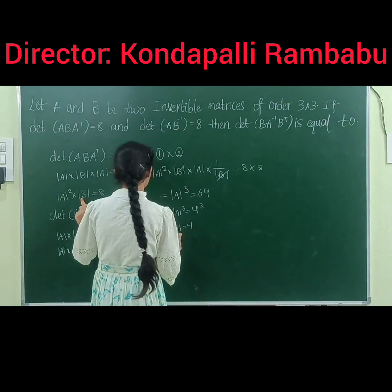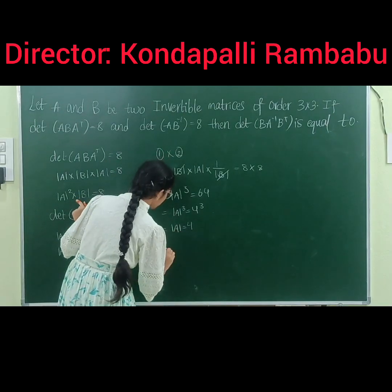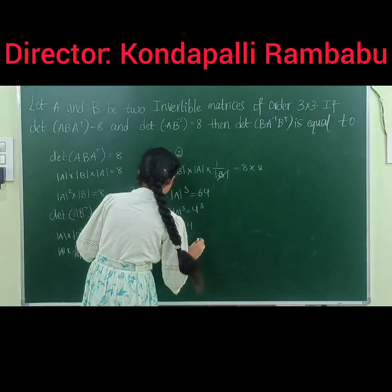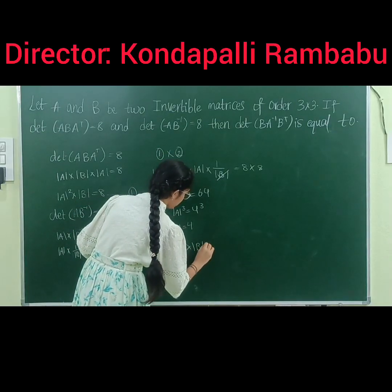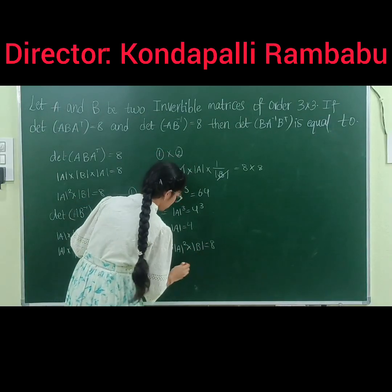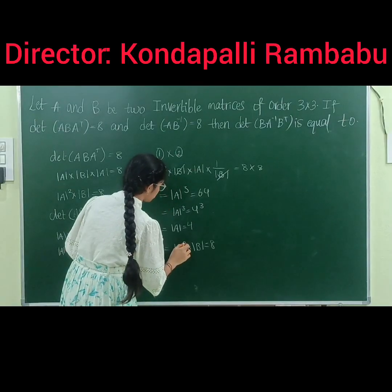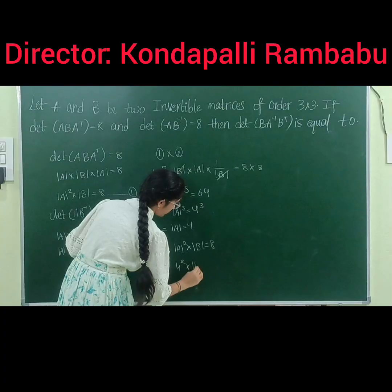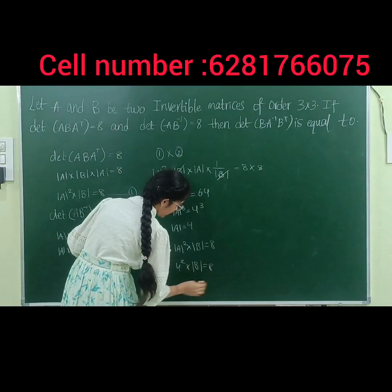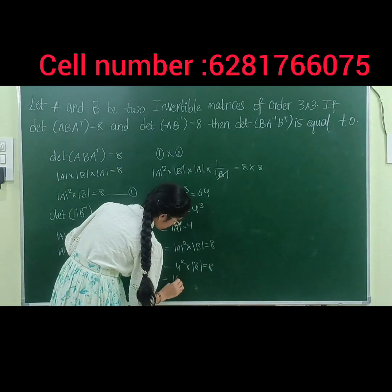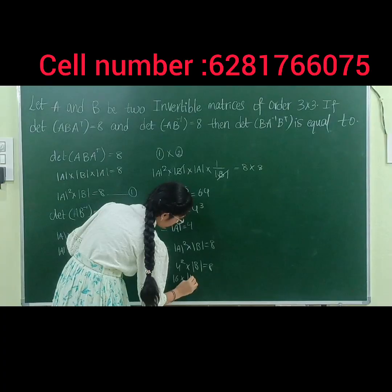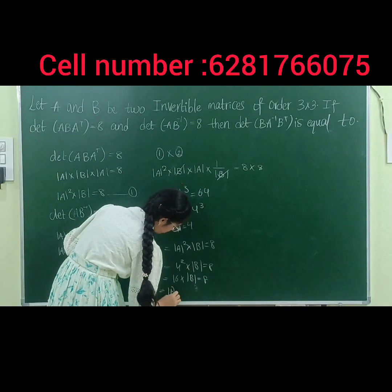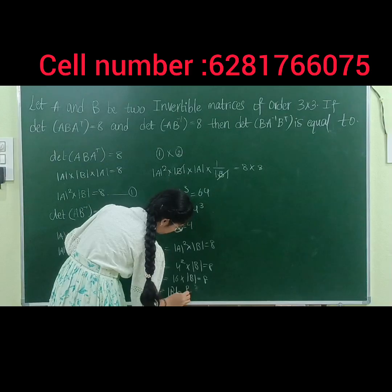Substituting |A| = 4 into equation 1: |A|² · |B| = 8. So 16 · |B| = 8, therefore |B| = 8/16 = 1/2.